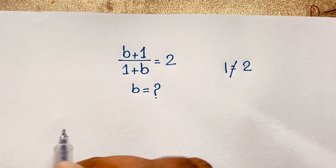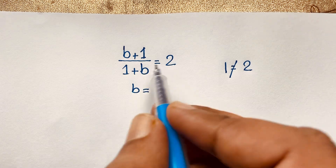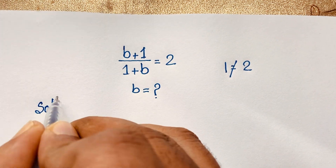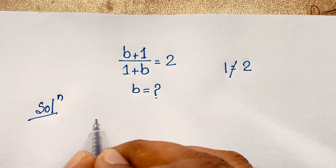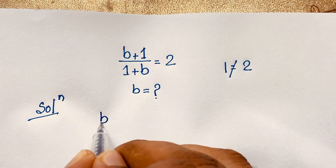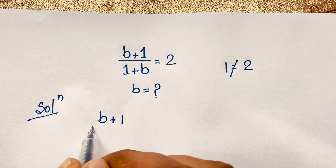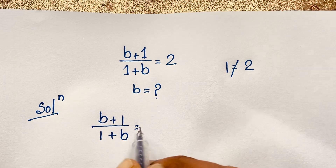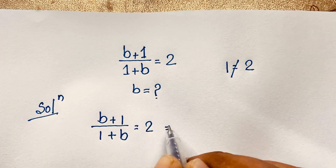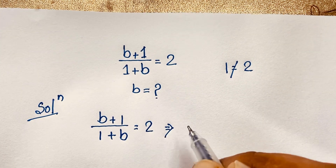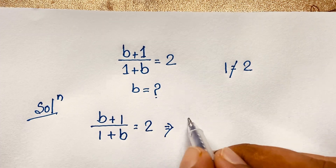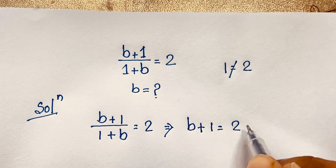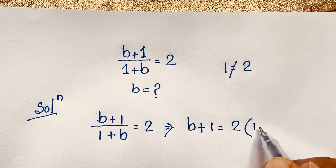So if I do cross multiplication here, the question (b + 1) / (1 + b) = 2 becomes: b + 1 = 2 × (1 + b).